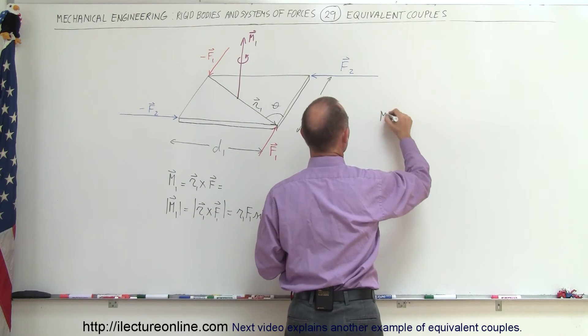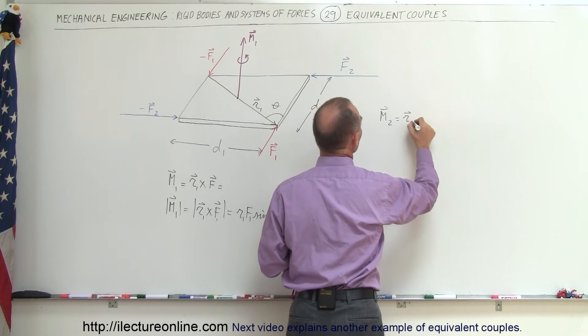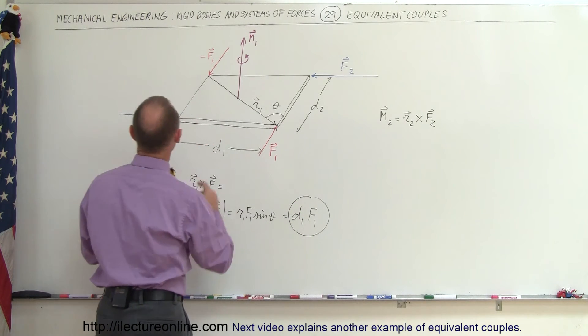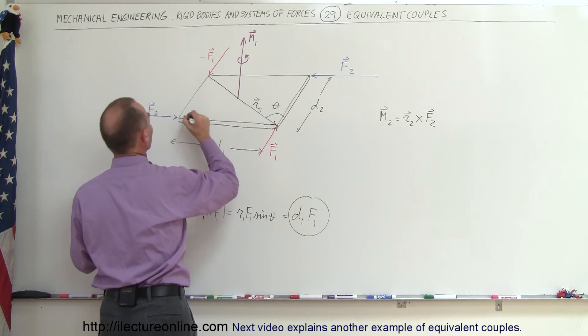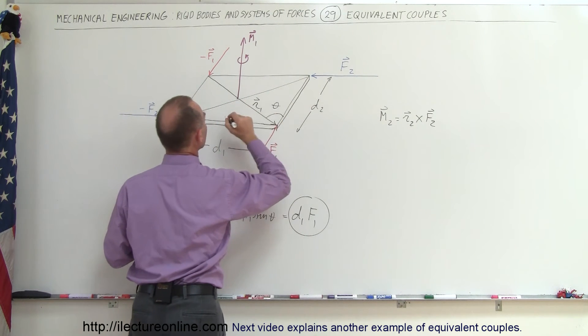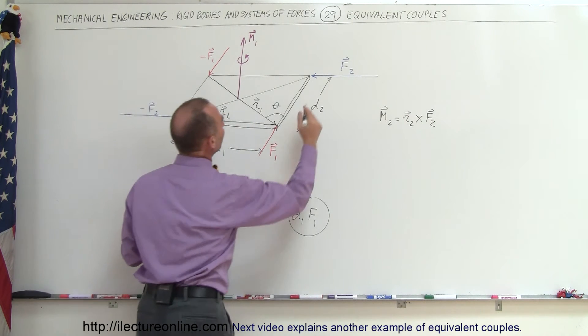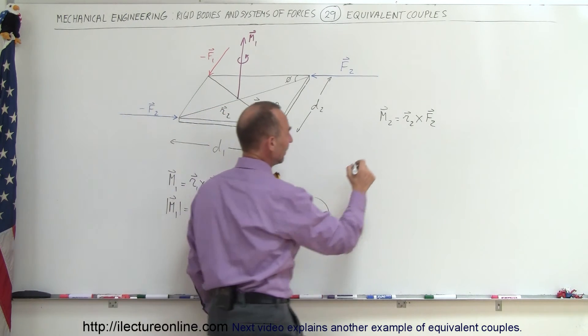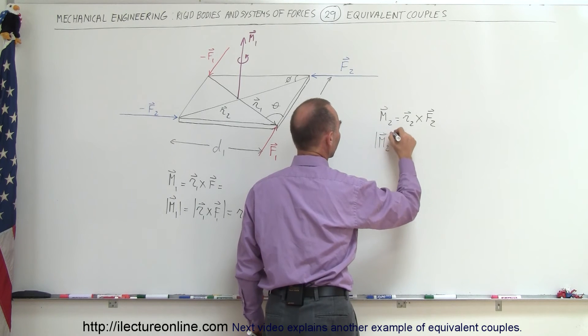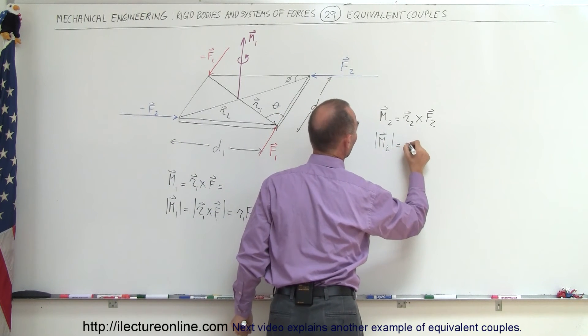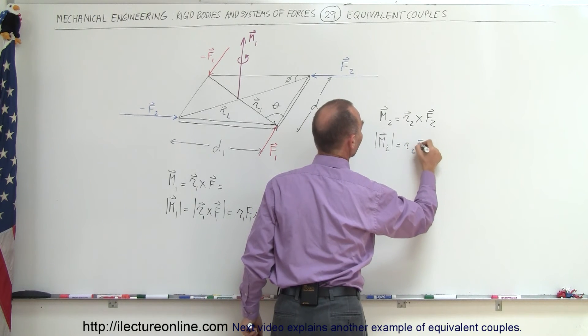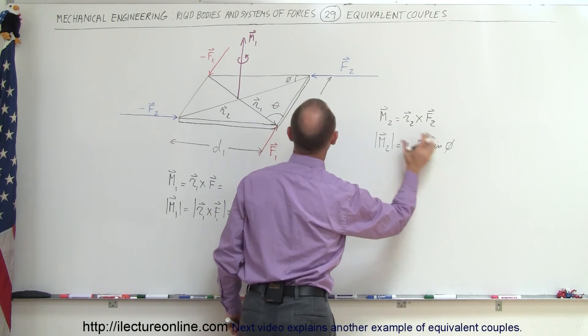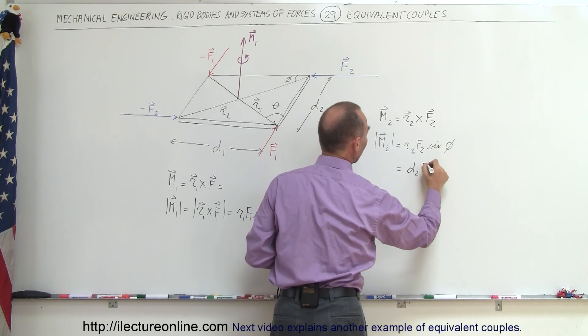Let's draw it from this point to that point right there. So there's vector R2. And then this would be the angle, let's call that vector the angle phi. We can say then that the magnitude of that moment caused by these two forces is equal to R2 times F2 times the sine of the angle between them. And R2 times sine of phi equals D2. So this can be written as D2 times F2.